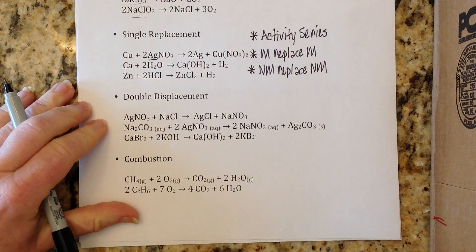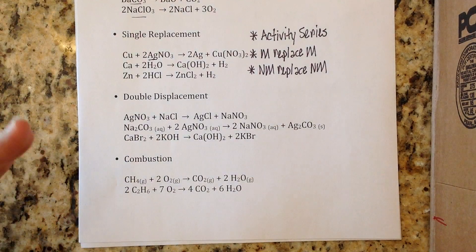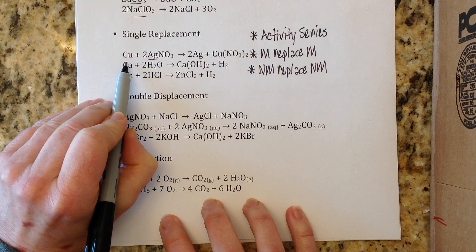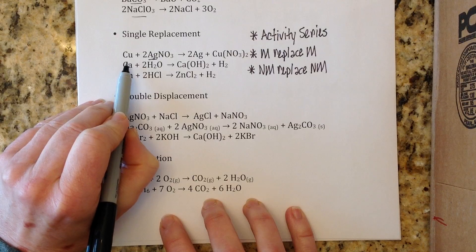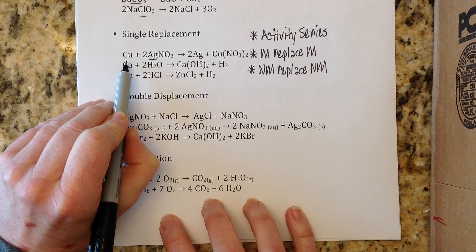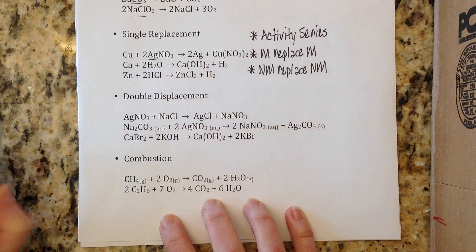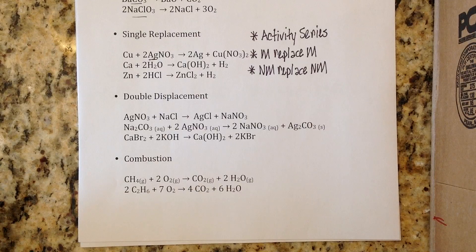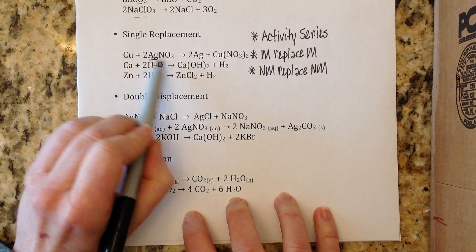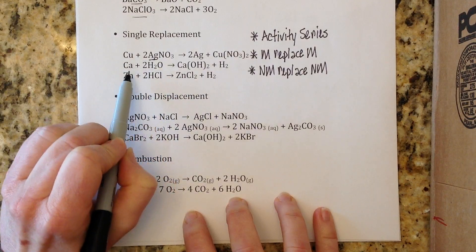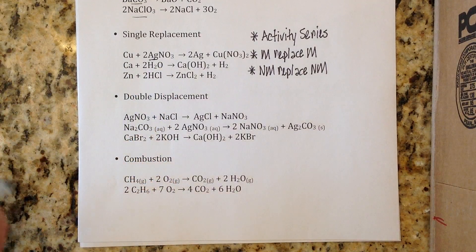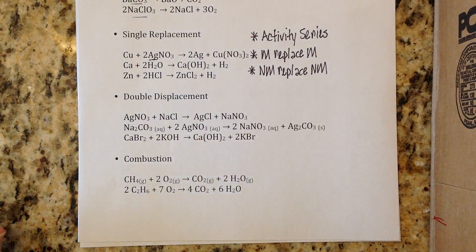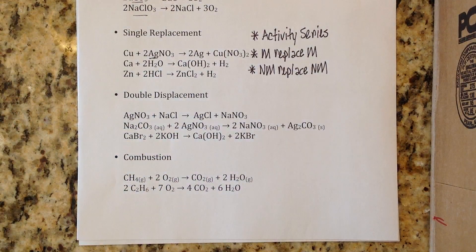I always tell my students this is kind of like the date with the third wheel. Silver is on a date with nitrate and they've taken copper along with them. Copper was lonely and they said just come with us, but copper is not so nice and once they get out on the date copper tries to kick silver out because copper wants to run off with nitrate. I often refer to this as the date and the third wheel - you've got a date which is an ionic compound and then something all by itself. You can also have a date with a non-metal, and in that case the non-metal will try to kick the non-metal out of the compound. These are a lot of fun, those are one of my favorites.